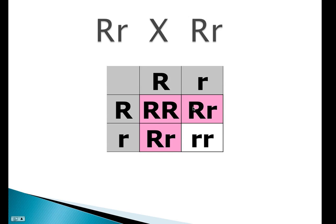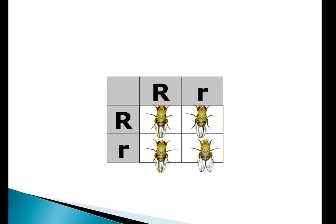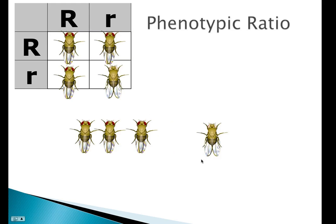And if you look at it, the results are such that one, two, three are red and one is white. Or we could say that 75% of the offspring would have red eyes and 25% would be expected to have white eyes.